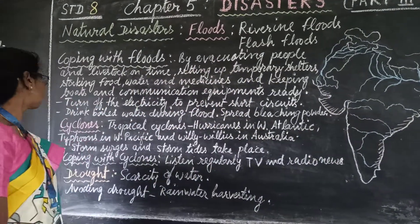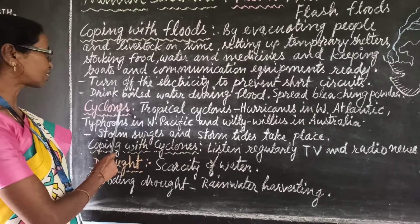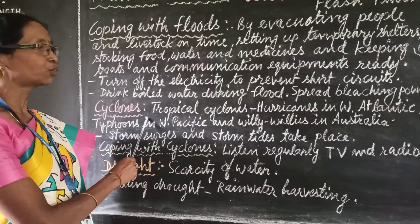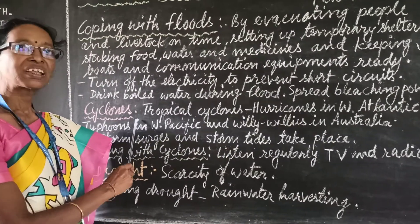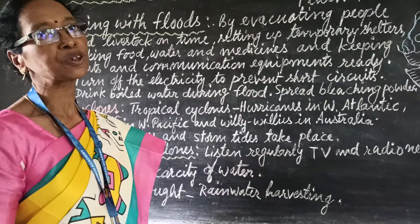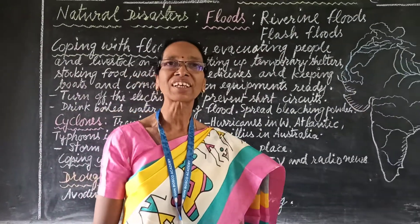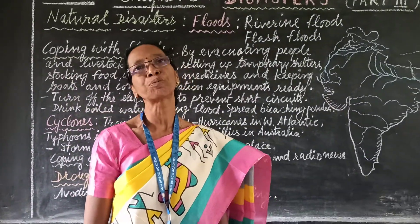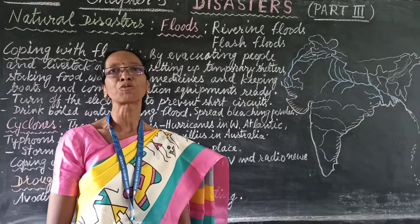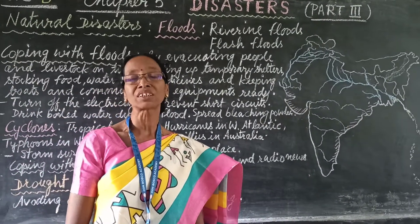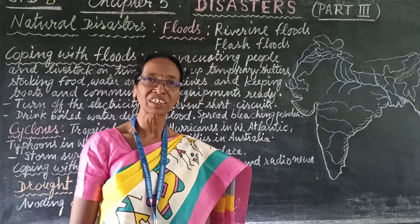The next natural disaster is cyclones. There are two types of cyclones: tropical cyclones and temperate cyclones. Tropical cyclones are more destructive than temperate cyclones.